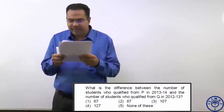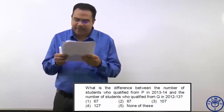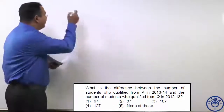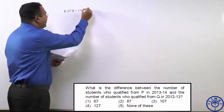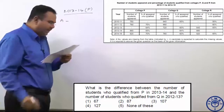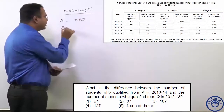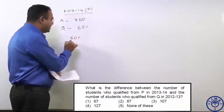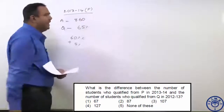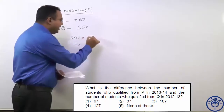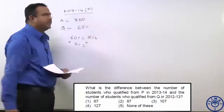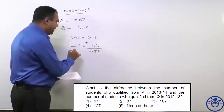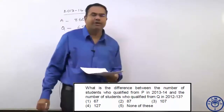Next question. What is the difference between the number of students who qualified from P in 2013-14 and the number of students who qualified from Q in 2012-13? Let us find out the number of students qualified from P in 2013-14. How many students appeared? In 2013-14 from P, 860 students appeared. How many students qualified? 65 percent. Let us calculate 65 percent: 65 percent can be written as 60 percent plus 5 percent. 10 percent of 860 is 86; 60 percent is 86 into 6, that is 516; plus 5 percent — half of 10 percent — is 43. So 65 percent is nothing but 559. This is the number of students who qualified from P.